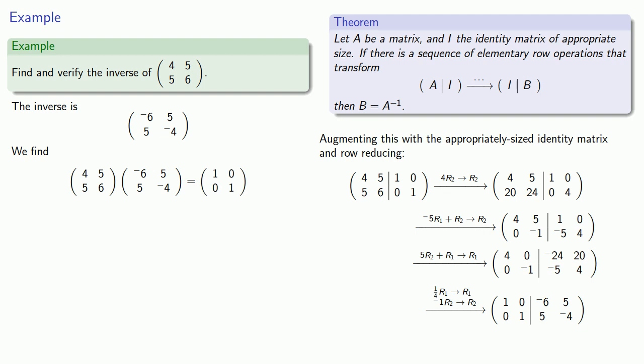At least, if we multiply on the right, we get the identity. So this is a right-inverse. We should verify that this also works as a left-inverse.